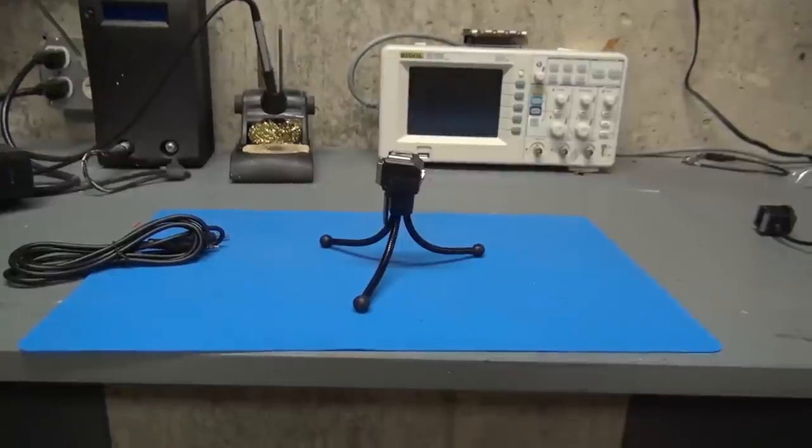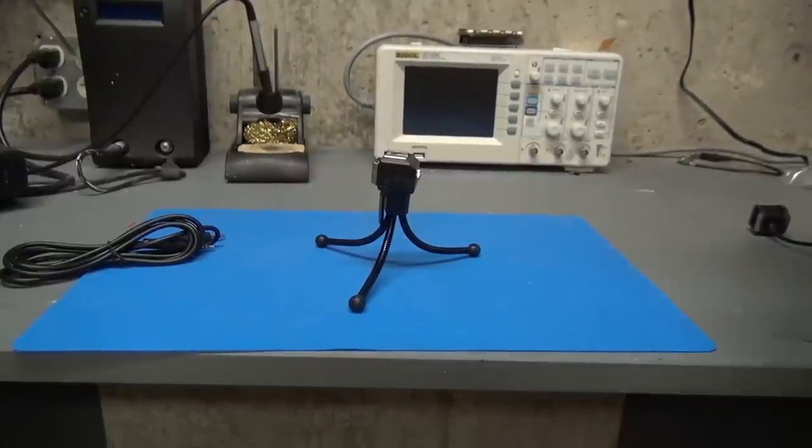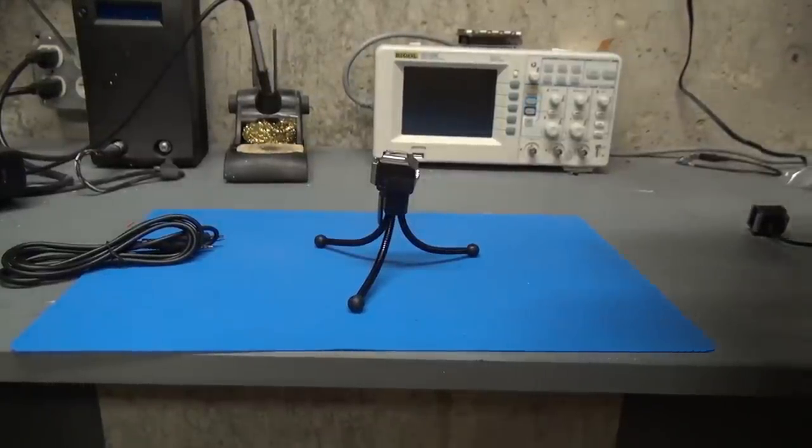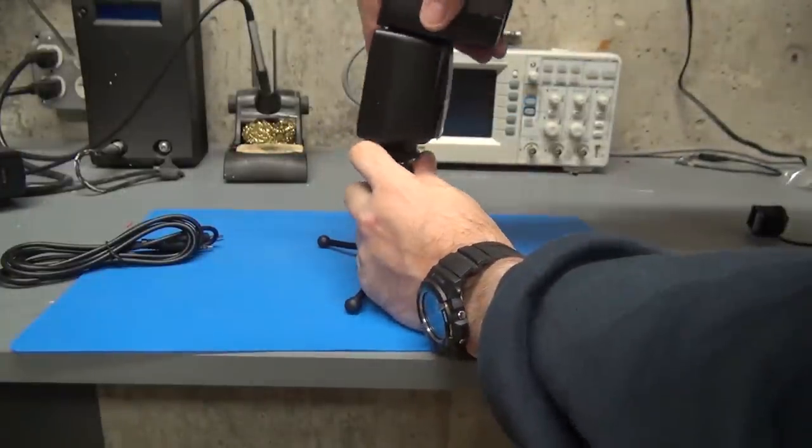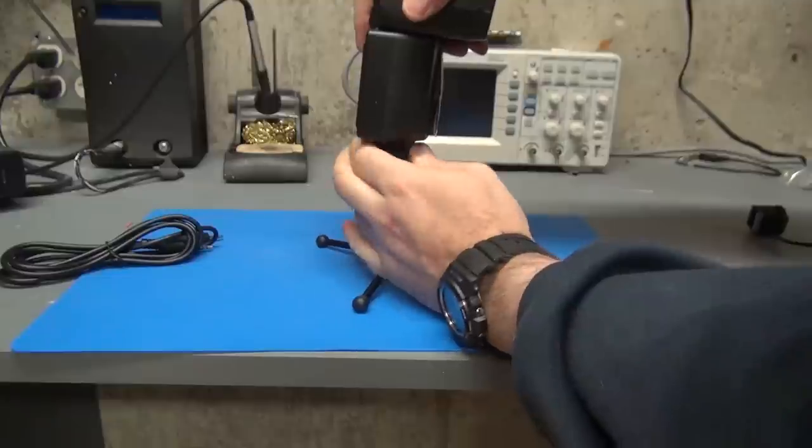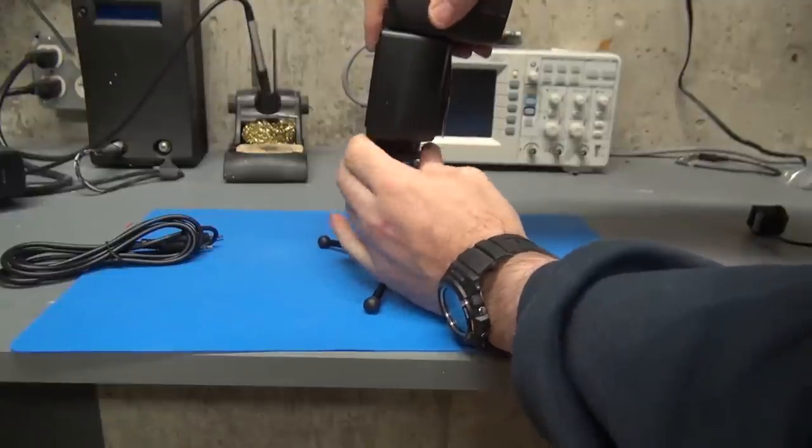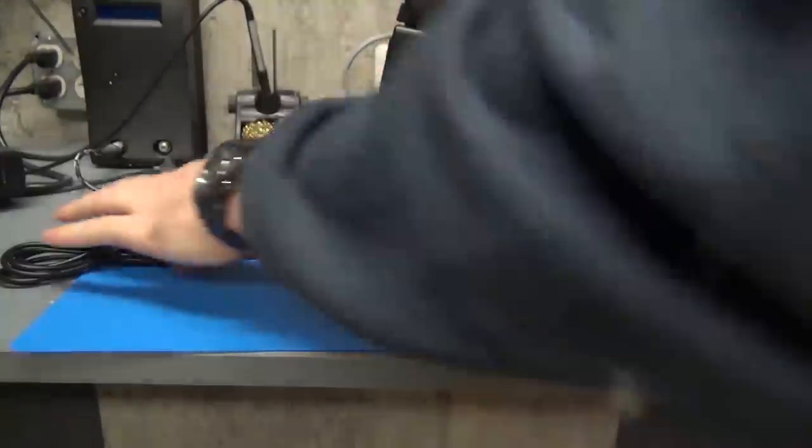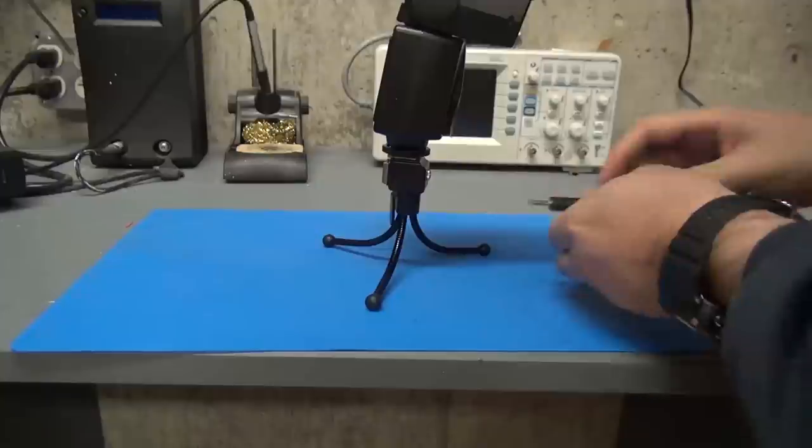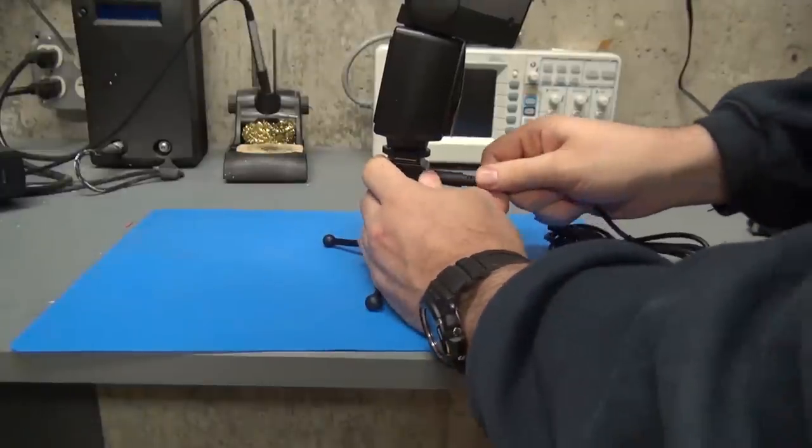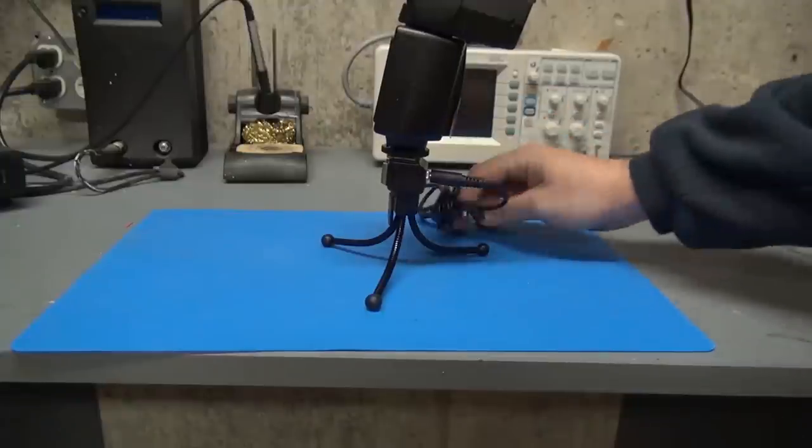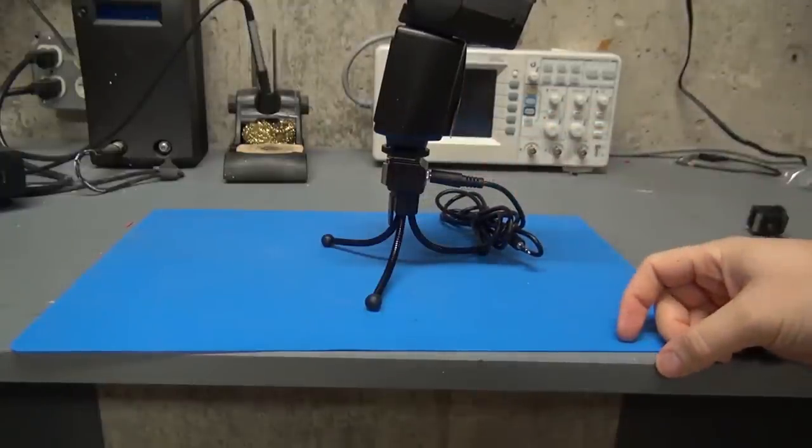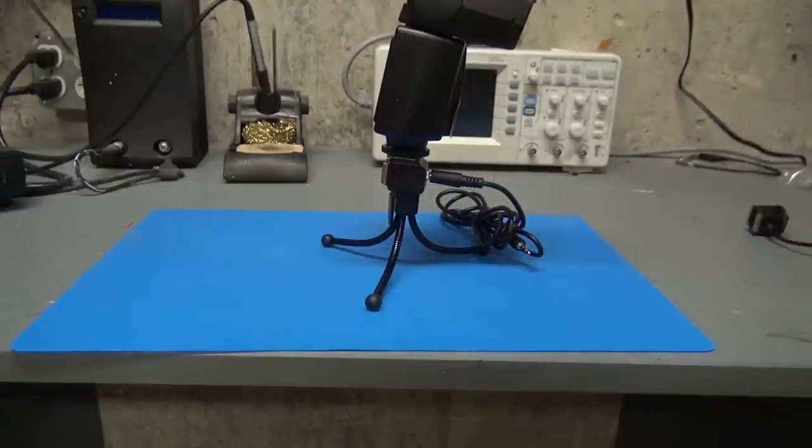And now I'll connect a flash to it. And then you just sort of screw the bottom thing. And at this point it's connected and it's in there rock solid. You plug in a cable like that. And at this point you'd connect the other end to the camera axe and you'd be good to go.